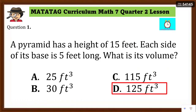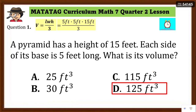Assessment Question 1: The answer is letter D — 125 cubic feet. A pyramid has a height of 15 feet and each side of its square base is 5 feet long. Since the base is square, use V = (length × width × height) / 3: 5 × 5 × 15 = 375 cubic feet divided by 3 = 125 cubic feet.